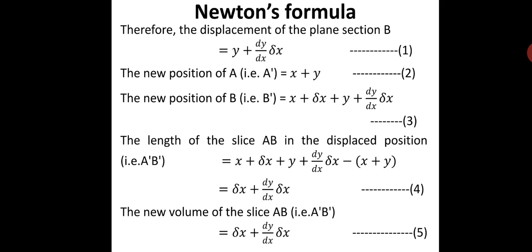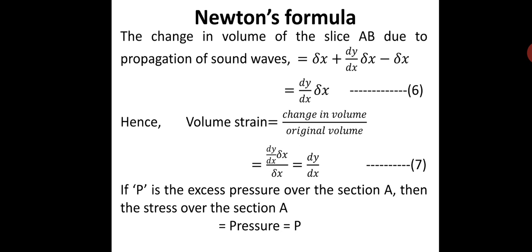This is the length of slice AB in the displaced position after propagation of sound waves. Since area is unity, the new volume of slice AB (now at A-dash B-dash) is delta-x plus dy/dx times delta-x. The change in volume equals new volume minus original volume, giving dy/dx times delta-x. Volume strain is change in volume divided by original volume: dy/dx times delta-x divided by delta-x, so volume strain equals dy/dx — let this be equation 7.